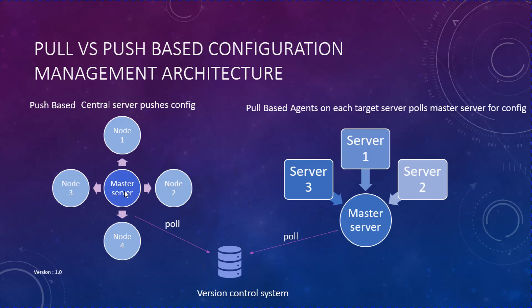The information or code gets stored in the version control system, gets version controlled, and then the master servers pull the version control system for changes in the code. Once they receive any changes, based on the architecture, the agents will either pull from the master server, or the master server will push those changes onto the target systems. With this, we've come to the end of this lecture.